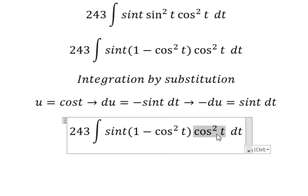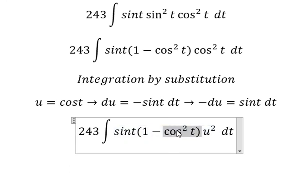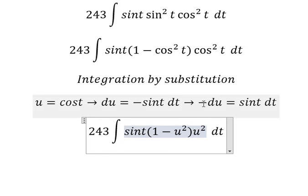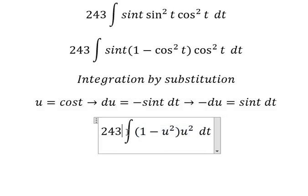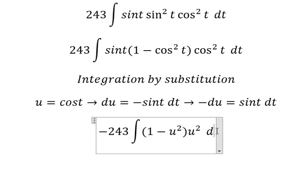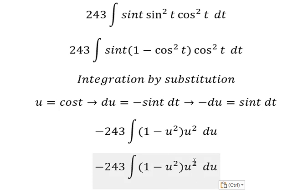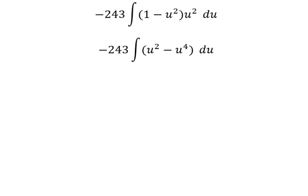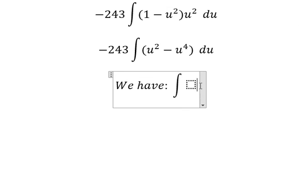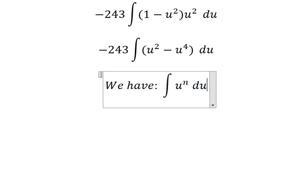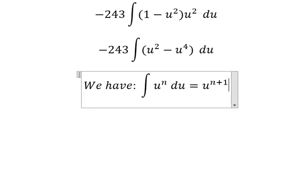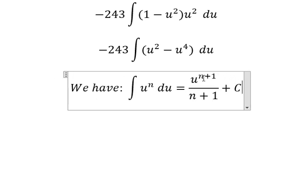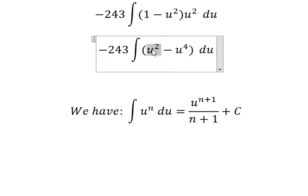So this term is changed to u, and this term is also changed to u. The sin(t) dt is replaced by negative du. We have u² multiplied by u², giving us u to a power. Now we have the formula: the integral of u to the power of n du equals u to the power of n plus 1 over n plus 1, plus C. We apply this formula here.